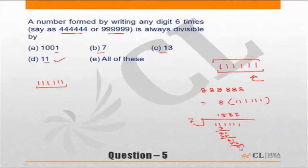7 sevens are 49. 21, 7 threes are 21. So it is divisible by 7 also. So my answer has to be all of these. I actually don't need to check the others because if it is dividing two of them, my answer can only be all of these.